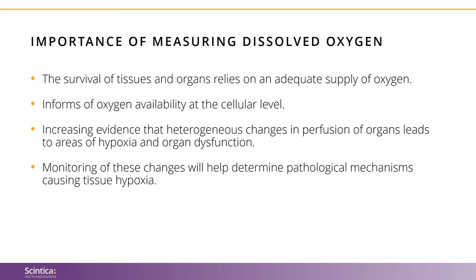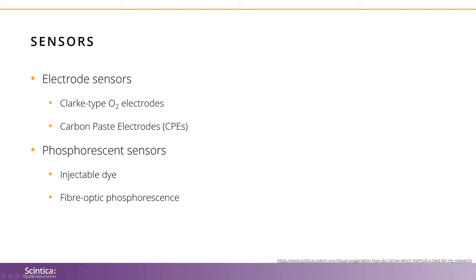To measure dissolved tissue oxygen, there are a number of technologies available. There are several ways researchers can measure oxygenation of tissue in vivo. We will discuss the following four techniques: the Clark-type oxygen electrode, carbon paste electrodes, injectable dye phosphorescent sensors, and fiber optic phosphorescent sensors. We will briefly explain each one and compare and contrast the specifications and characteristics of these various sensors.